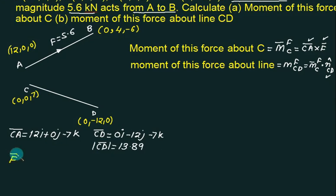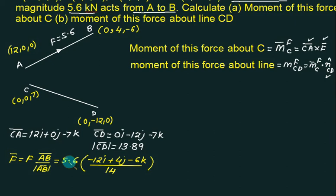F bar is equal to F, is it directed from A to B? So this one is AB bar upon mod of AB bar, 5.6. What is AB bar? AB bar is B minus A, 0 minus 12, 4 minus 0, 4j, minus 6, 0, minus 6k. Root of 12 square plus 4 square plus 6 square. And this 5.6 and this 14, is it 0.4? Because if you multiply inside, it will become a fraction. And if you do not multiply, it becomes the integer. Whereas multiplication of integer is very easy. And multiplication of fraction will take time. So that is why always take this quantity inside the bracket.